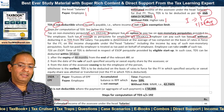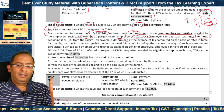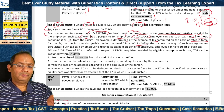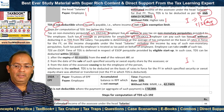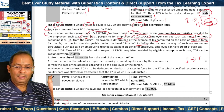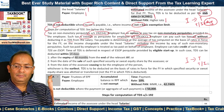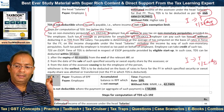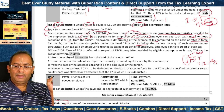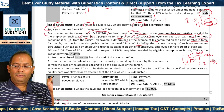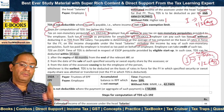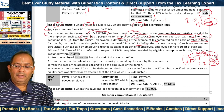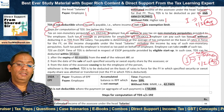The tax payable on non-monetary perquisites is determined at the average rate of tax computed on the basis of rates in force for the financial year, applied on the income chargeable under the head salaries including the income by way of such non-monetary perquisites. Tax divided by such income gives the average rate of tax. This income has two components: the non-monetary perquisite and the balance salary. We apply the average rate to the non-monetary perquisite to get the tax paid by the employer under section 192(1A), and apply it to the balance salary to get the TDS to be deducted under section 192.